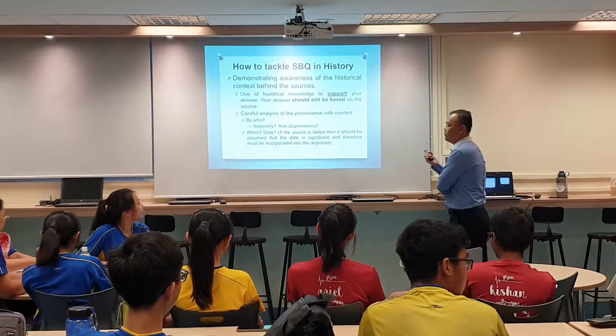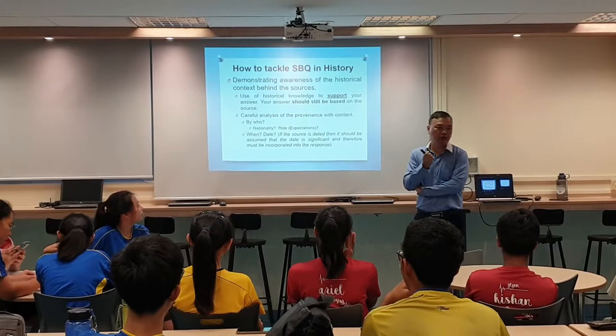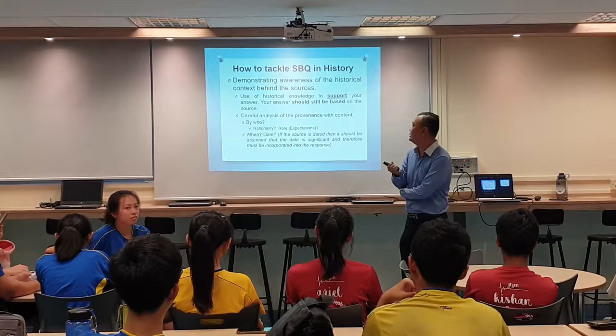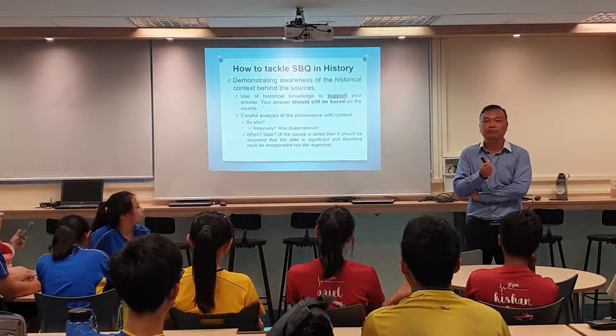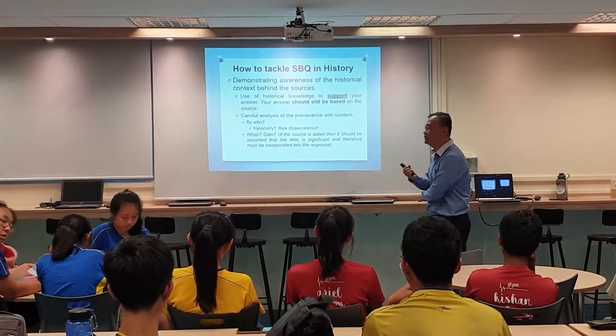The next thing is about provenance. Other than using the historical context, the next thing that is very, very important is the analysis of the provenance linking to the context. This is something that you are already very familiar with when we talk about reliability. But however, in history, the provenance plays a very, very important role in allowing you to understand the source.